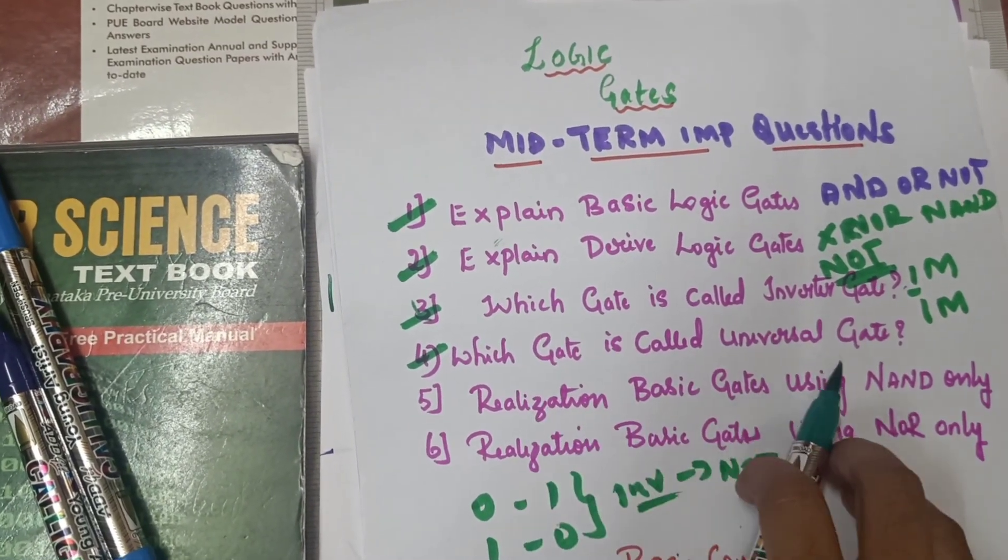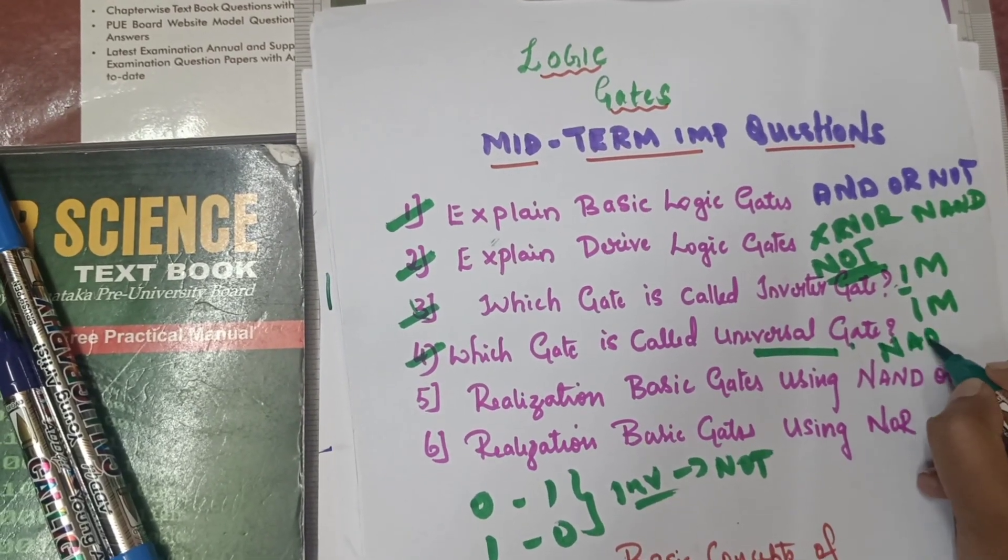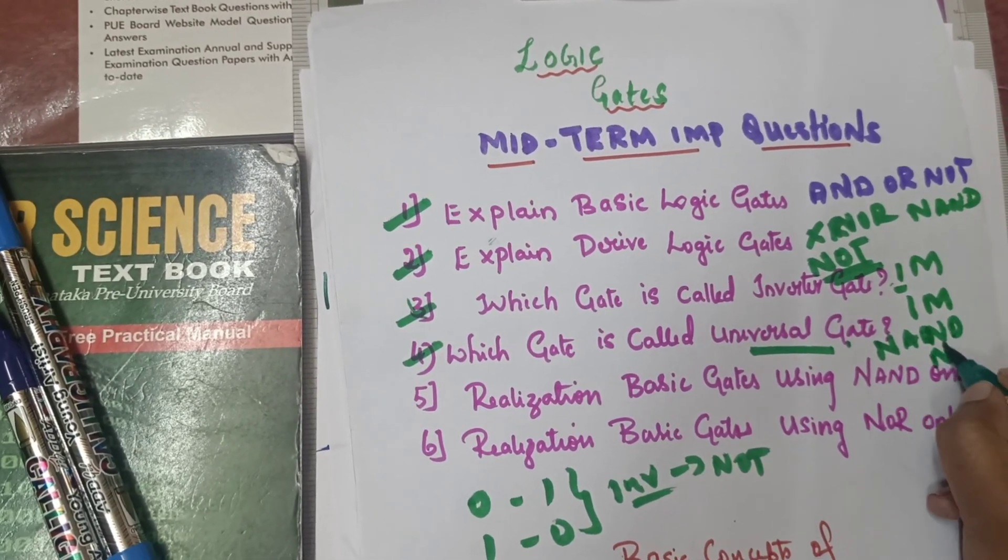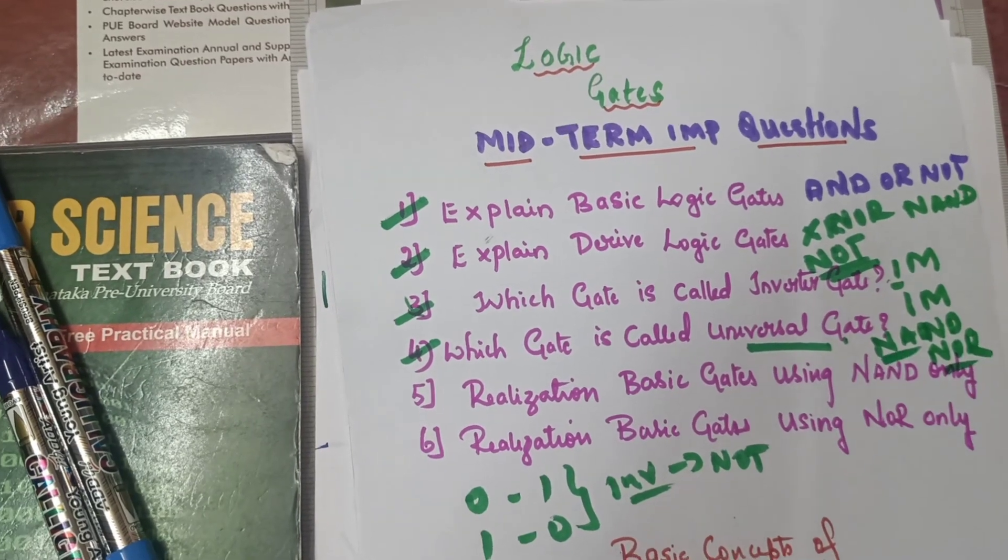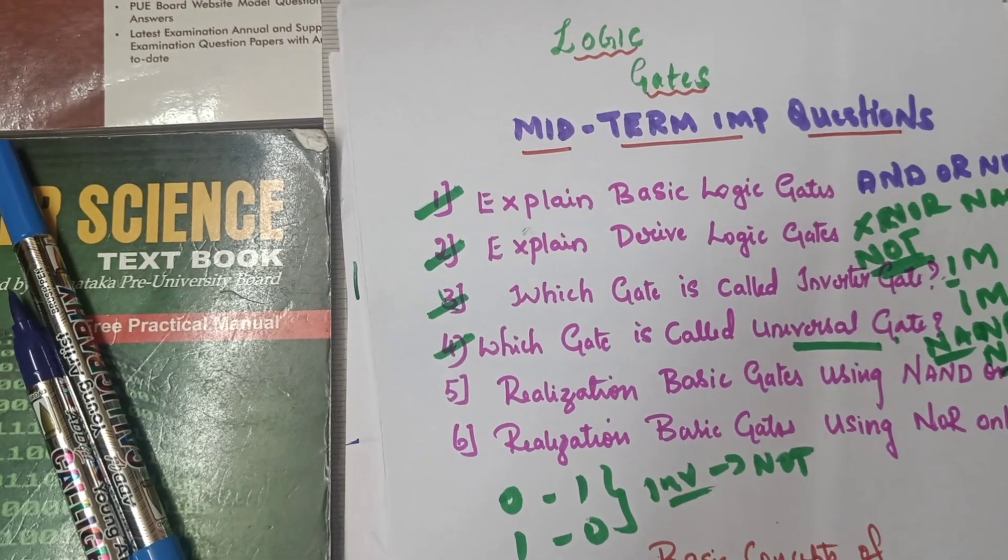Fourth one, which gate is called universal gate? Universal gate is two gates - NAND and NOR gate. This is the universal gate. This is all MCQ, fill in the blanks.